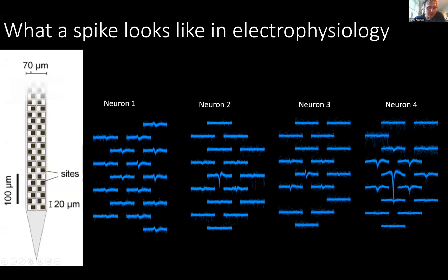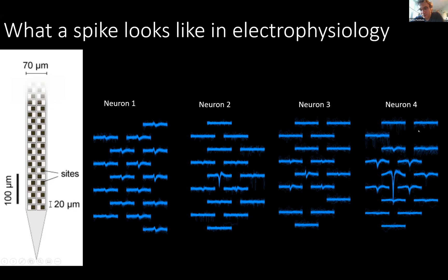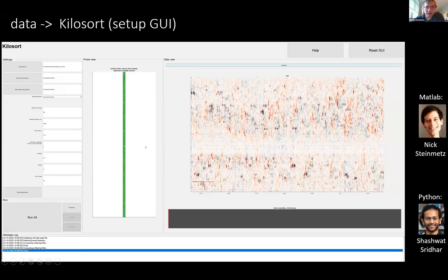What Kilosort actually does is it takes voltage data from probes like this, where every one of these little channels records a different piece of voltage from a different point of view. Then it finds the electrical signatures of each neuron on all of these different sites. Here are four example neurons. For each one of them, what you're seeing is a little snippet essentially less than one millisecond long that we detected as belonging to that neuron, with multiple different events overlaid on top of each other. You can see that the events from a single neuron are very reproducible and are localized on specific electrodes on this probe. That is essentially the problem of spike sorting — to find such events and cluster them together.